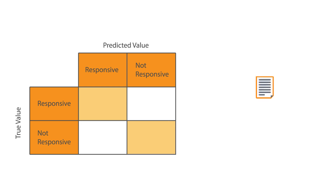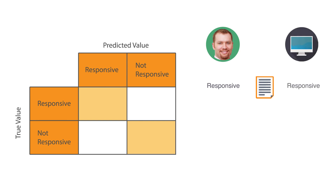We take one of the 100 documents we saw before. For this document, let's assume that it's a true responsive document, and let's also assume that the machine predicted that document to be responsive as well. Since both the human reviewer and the machine coded the document as responsive, we will call this a true positive, and that goes into the true positive quadrant. Out of our 100 documents, we said before that there were 30 responsive documents, and we'll assume that the machine correctly predicted 25 out of the 30 documents. In other words, we have 25 true positives.